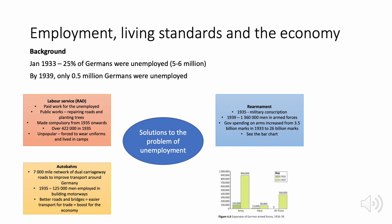Regarding employment and the economy: in January 1933, 25% of Germans were unemployed, but by 1939 only 0.5 million were unemployed. The Nazis solved this through three measures. Labour Service provided paid work for the unemployed — usually public work such as repairing roads and planting trees. It became compulsory for the unemployed and, though unpopular, led to 400,000+ employed from 1935 onwards.